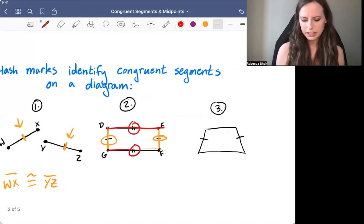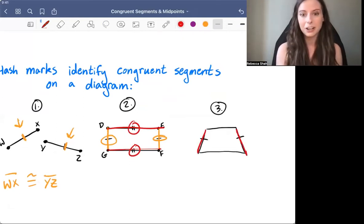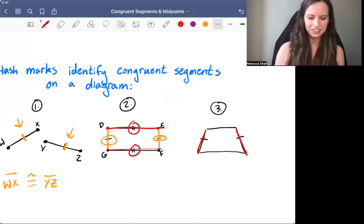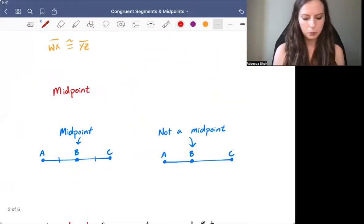For number three, notice only two of the segments are marked as congruent. So that's all we know. Now that leads us to midpoint.